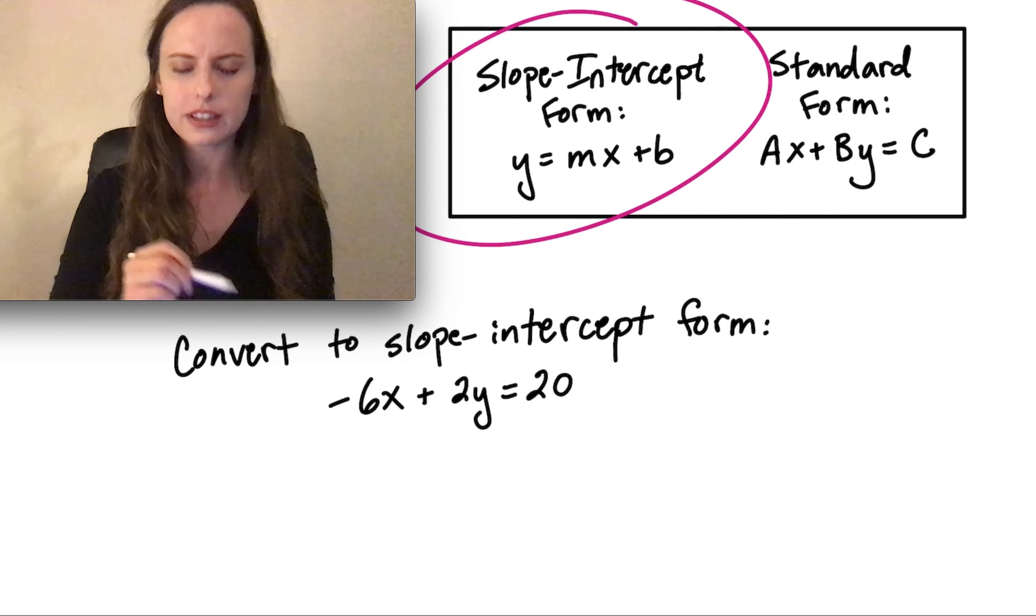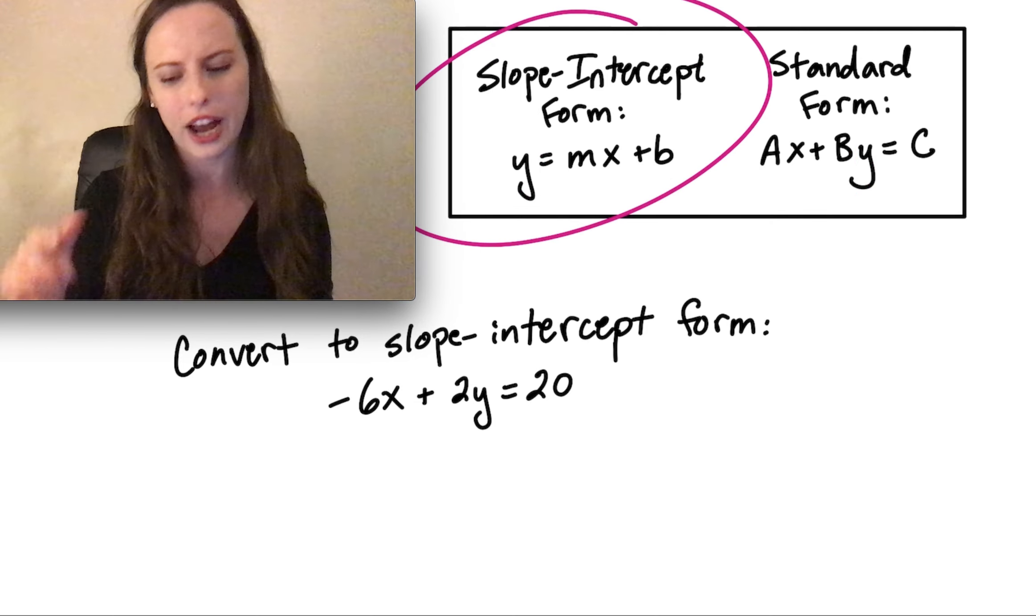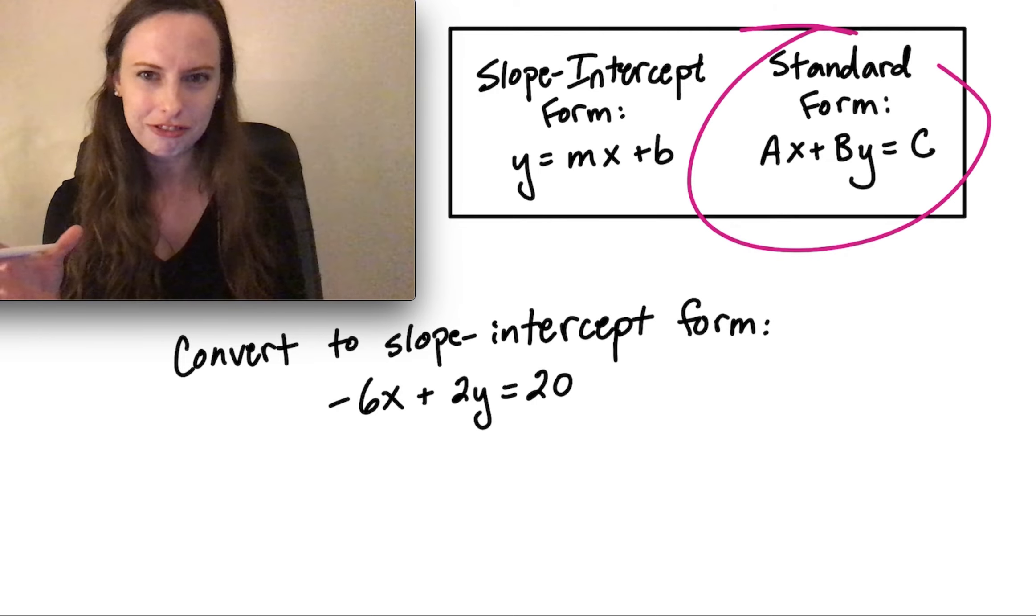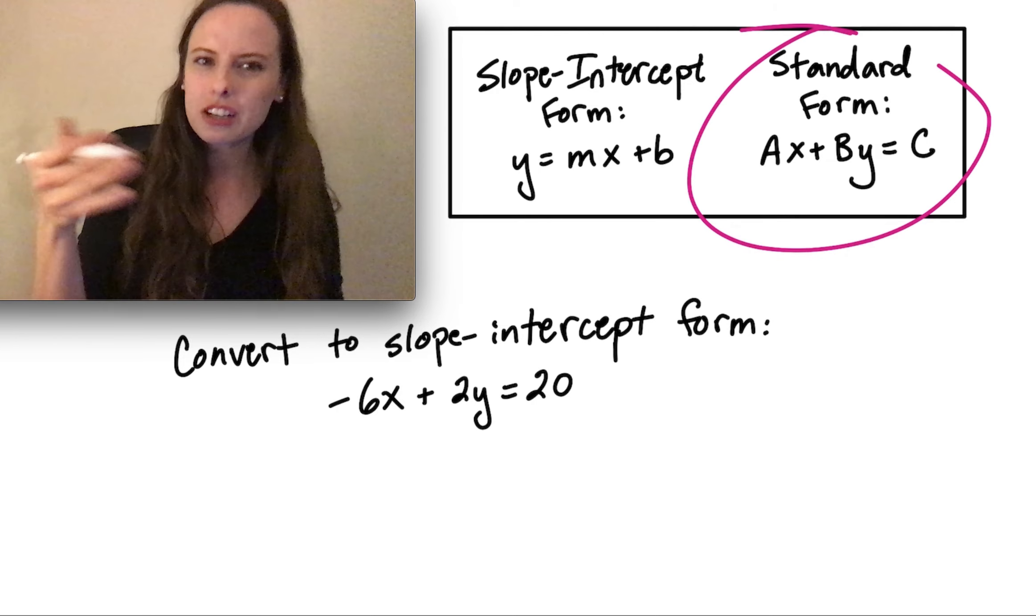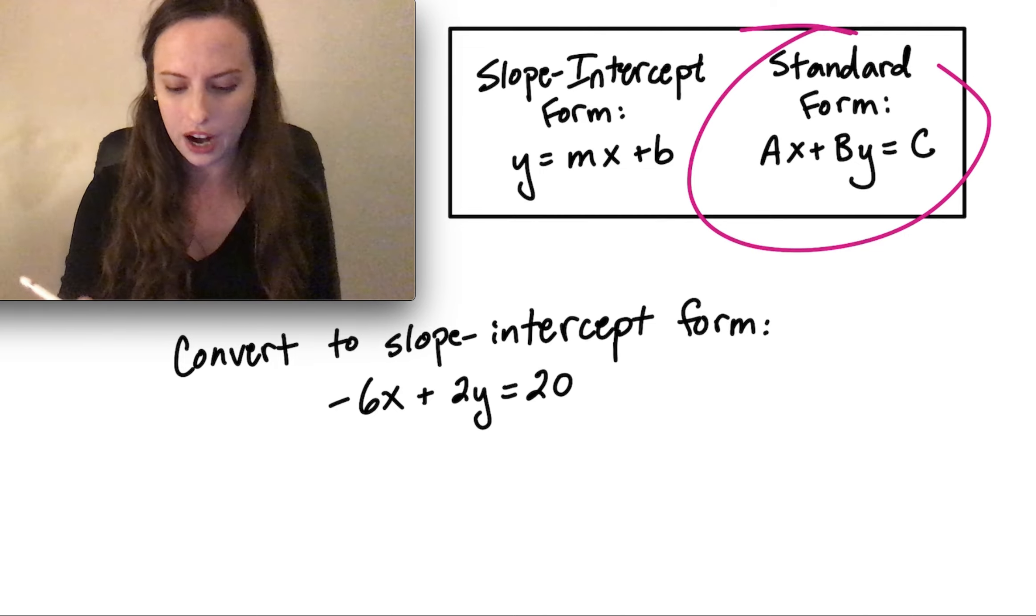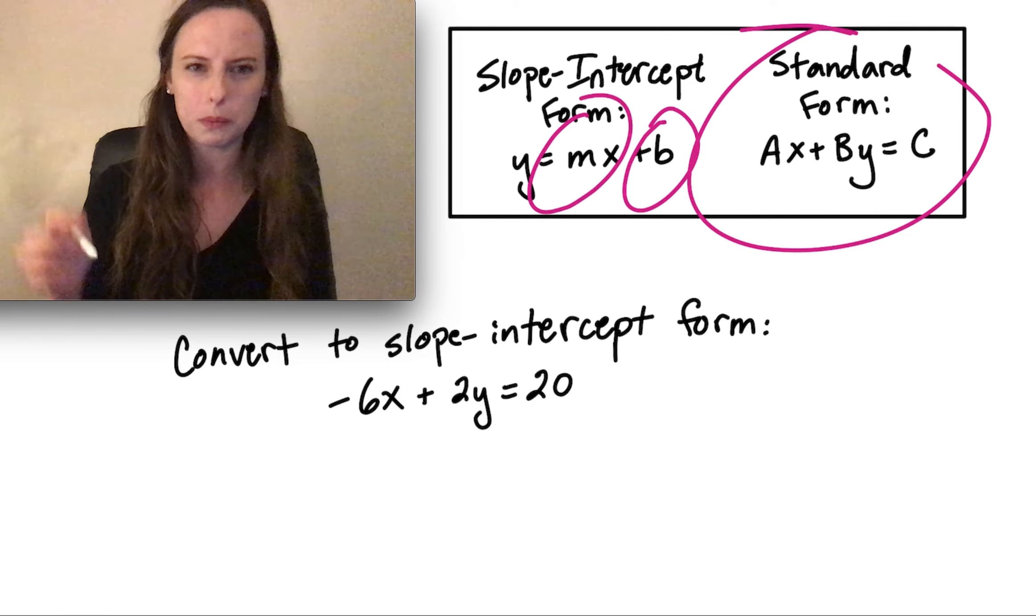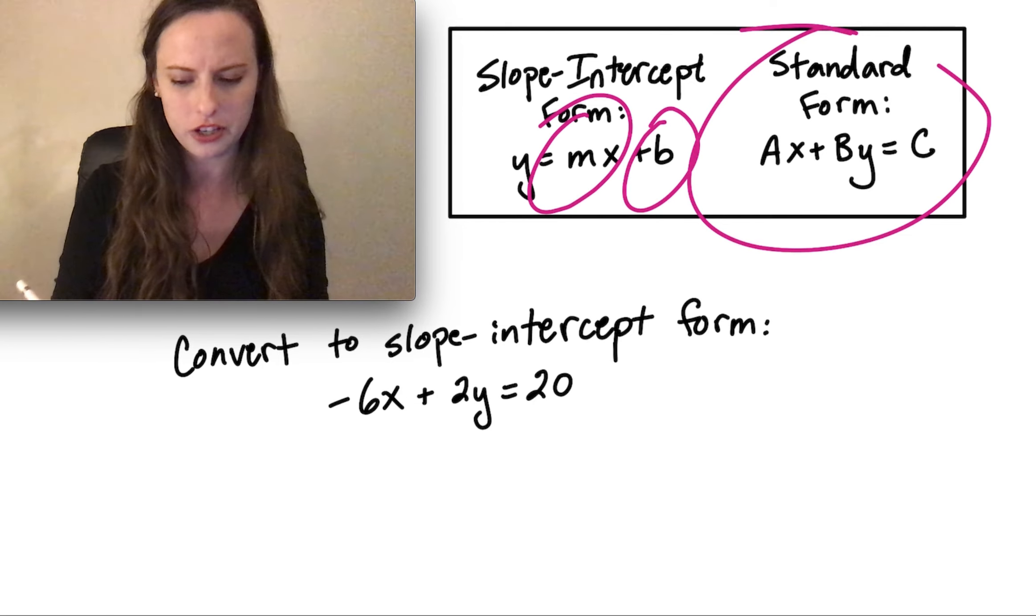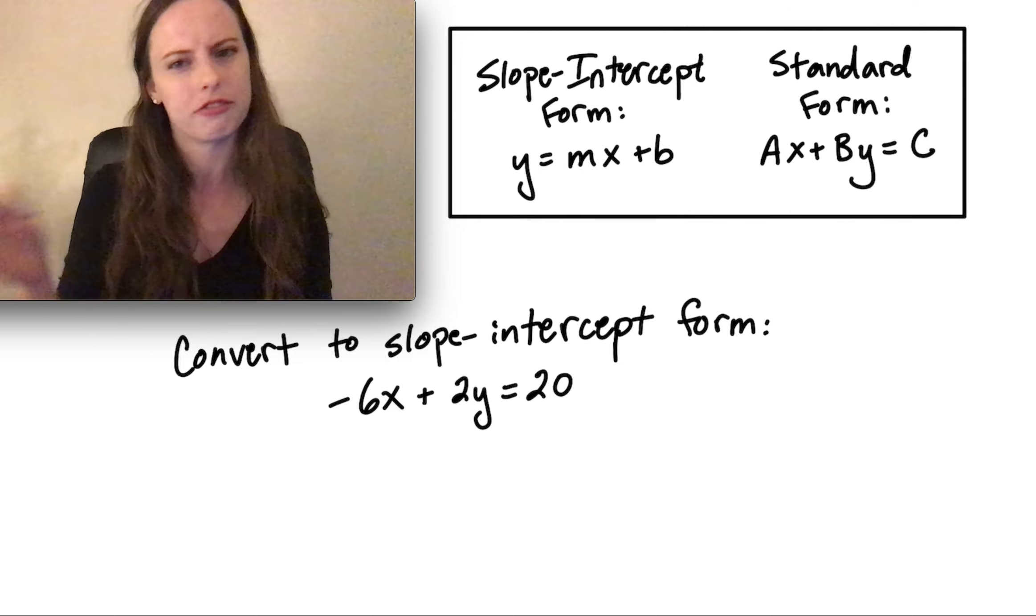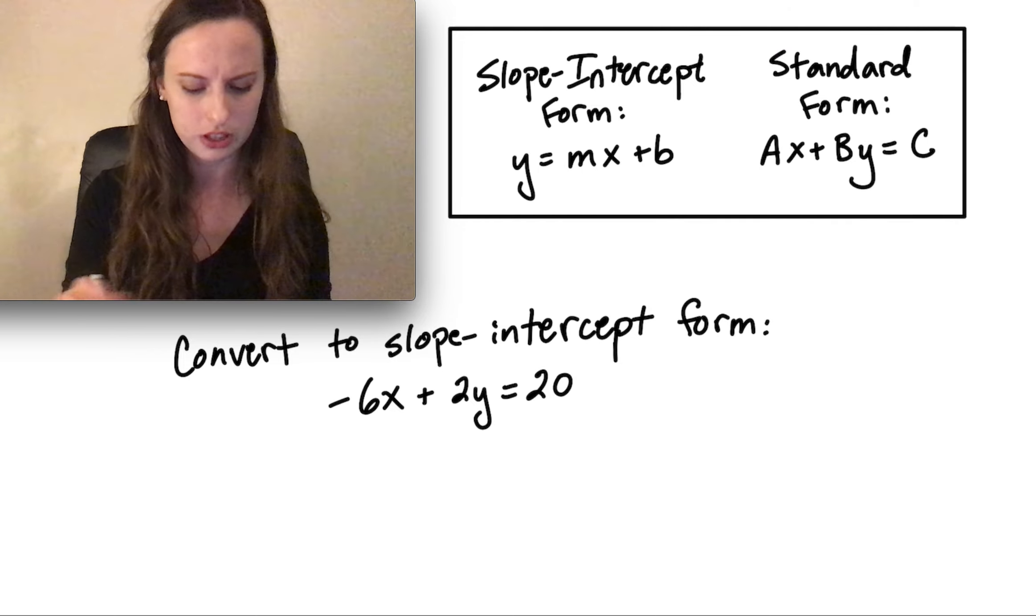One reminder is that slope-intercept form is really useful for graphing. There's going to be times when you're given an equation in standard form, and we want to convert because that may make it easier to visualize really quickly what that y-intercept would be and what the slope would be so we can get a quick picture of what that graph might look like. That's a common reason for converting from one to the other.